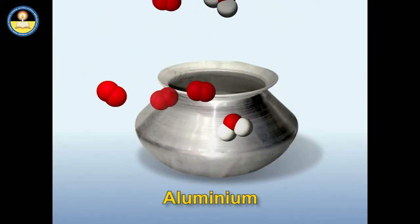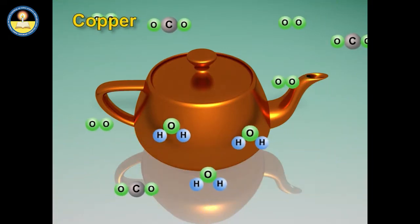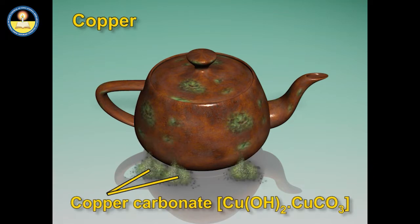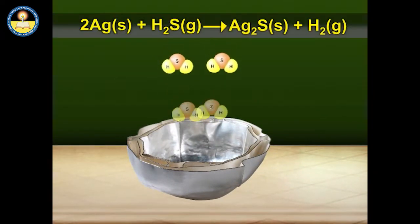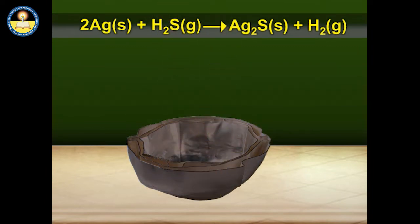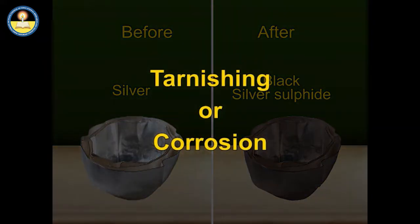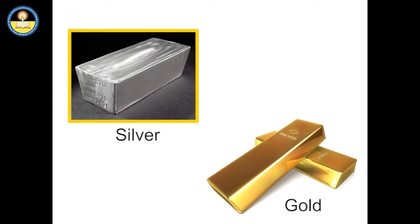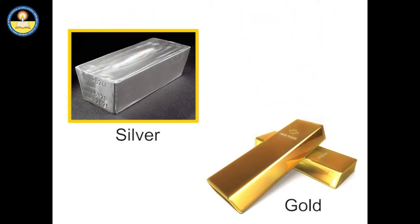Copper, when exposed to moist air, gets coated with a green layer due to the formation of basic copper carbonate — Cu(OH)₂·CuCO₃. Silver acquires a black shade due to formation of silver sulphide. This is called tarnishing or corrosion. Gold and silver are inert metals; there is very little — rather, no — effect of air and water on them. So these metals remain ever shining.